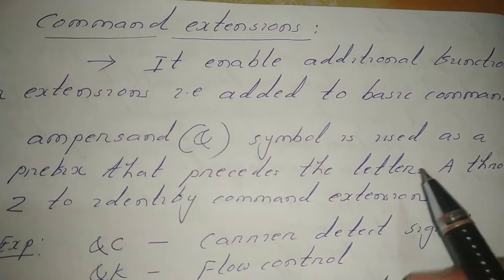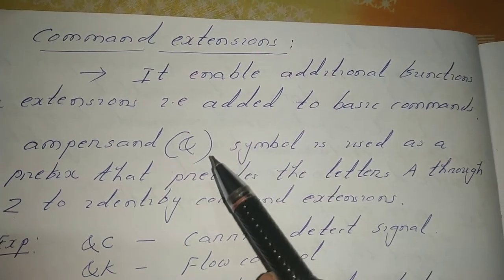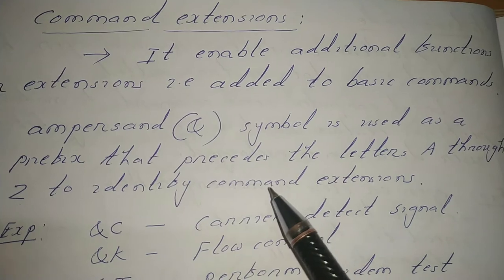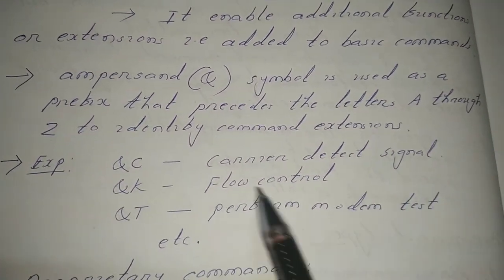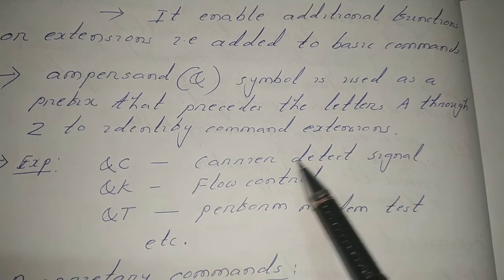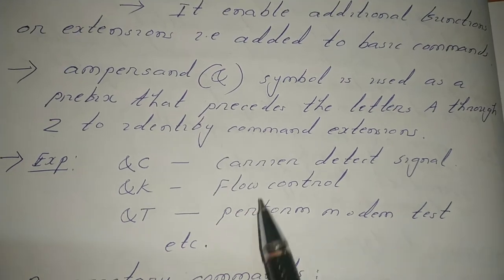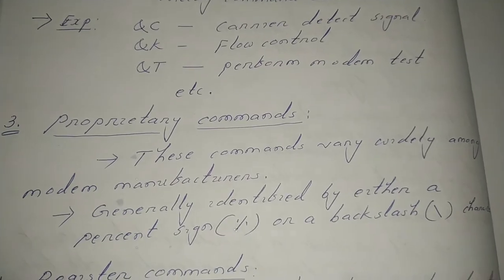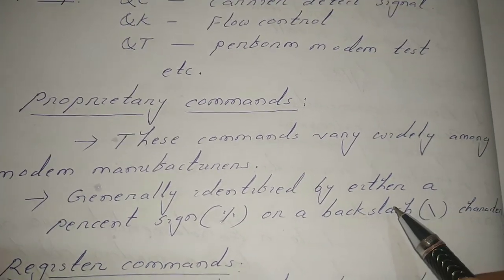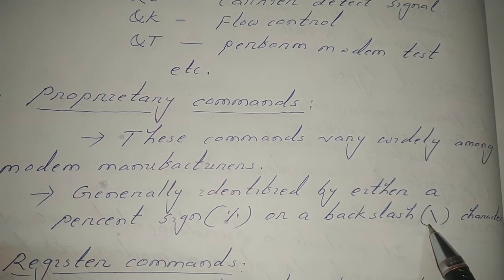The second type is command extensions. As the name suggests, these extend the functionality of basic commands. To extend a basic command, the ampersand symbol (&) is attached as a prefix before the basic command. For example, &C means carrier detect signal, &K means flow control, and &T means perform a modem test. The third type is proprietary commands, which are optional and vary from one manufacturer to another. Proprietary commands are identified by prefix symbols such as the percentage sign (%) or backslash characters.